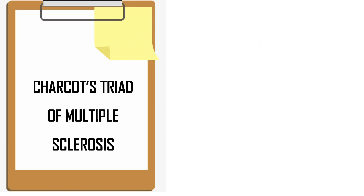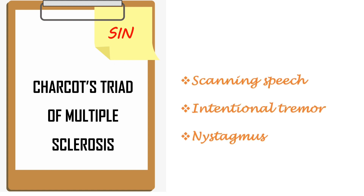Next one: Charcot's triad of multiple sclerosis. They have committed a sin, so they got multiple sclerosis. Their eyes, mouth, and muscles are affected. SIN: S for scanning speech, I for intentional tremor, N for nystagmus.